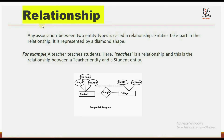Relationship. Relationship is very simple. An association between one or more entity types is known as a relationship. Entities take part in the relationship. It is represented by a diamond shape, also called a rhombus shape.